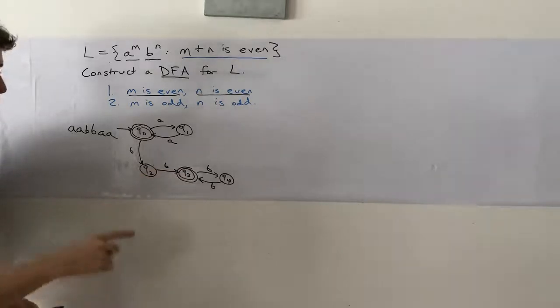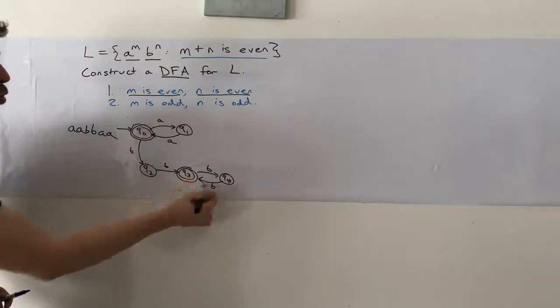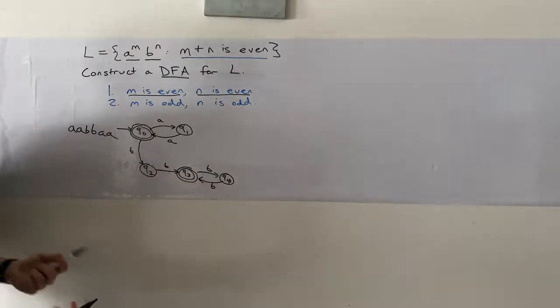If we have any odd number, either we're at Q2 or we're at Q4, neither of which is a final state. And so if we have an even number, we have two that come here and any two afterward are going to end up back at Q3. And so it's accepted.